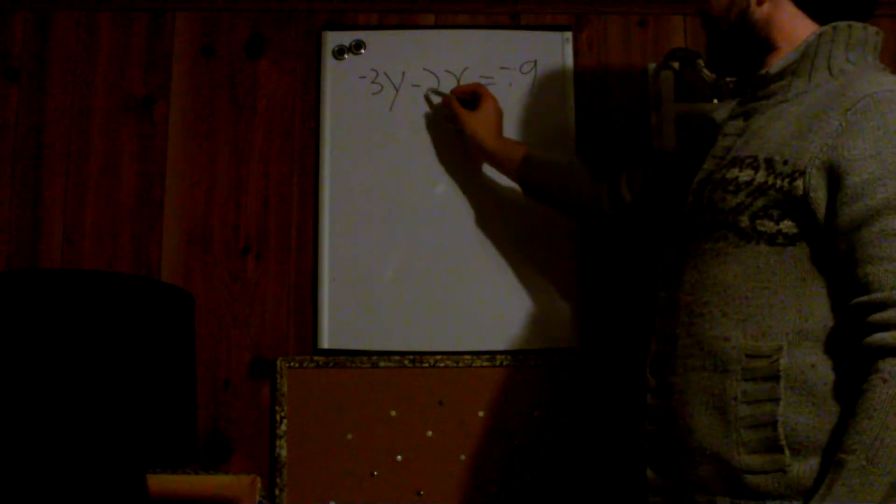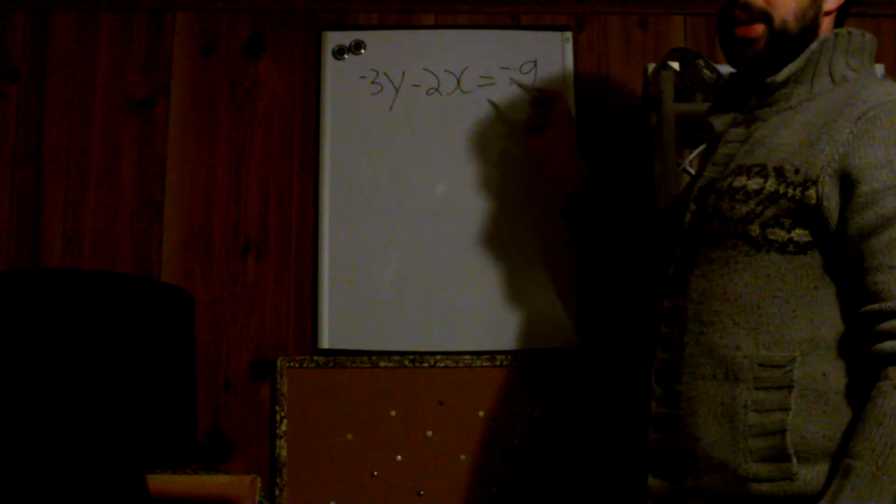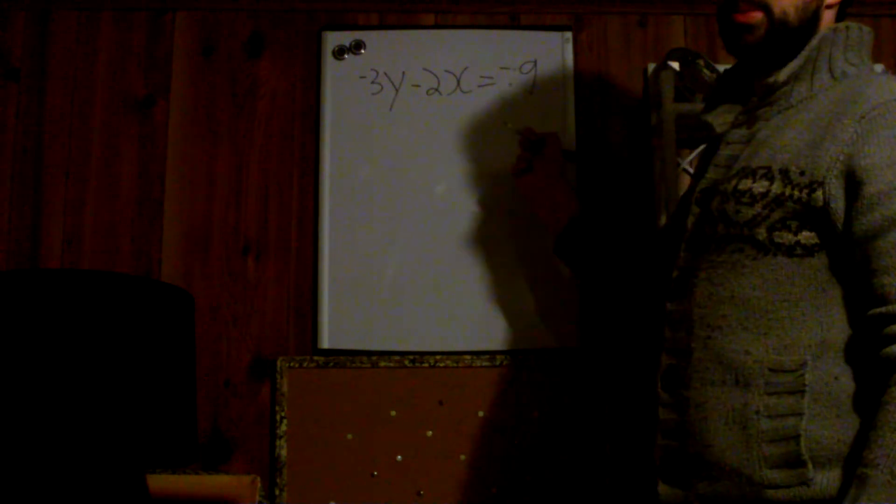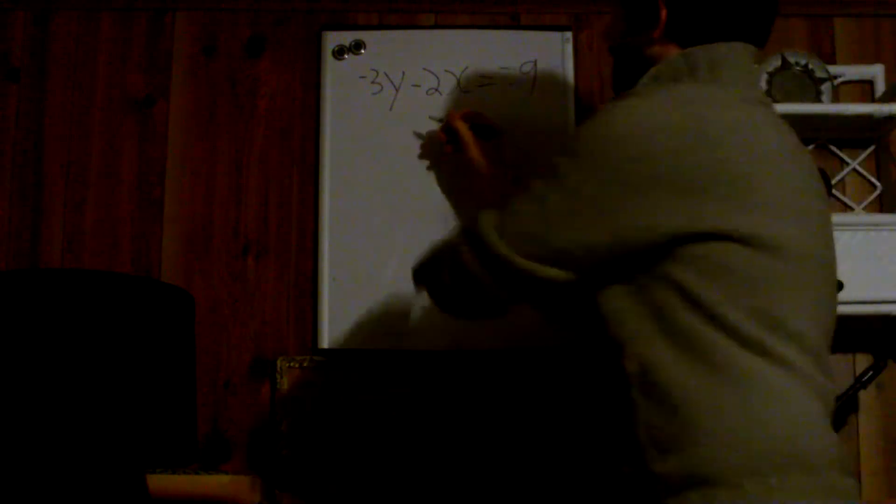So we're going to get rid of negative 2x. How do we get rid of negative 2x? We add positive 2x. And if we do it on one side, we have to do it on the other side. So those cancel. Negative 3y equals negative 9 plus 2x.